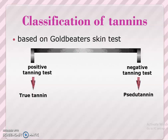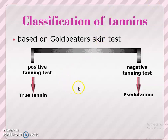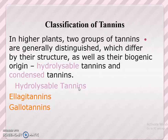Classification of tannins: There are two ways to classify tannins. The first is based on the gold beater's skin test, which distinguishes true tannins from pseudo-tannins. In higher plants, two groups of tannins are generally distinguished based on their structure and biogenic origin: hydrolysable tannins and condensed tannins.